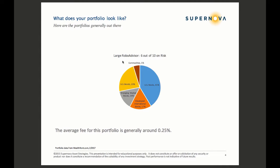And then here's a large robo-advisor. U.S. stocks and U.S. bonds account for about 64%, a chunk in developed international, adding in a chunk of emerging markets, and not a lot in anything else. This portfolio charges around 0.25%.